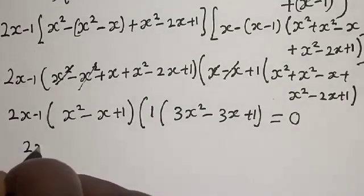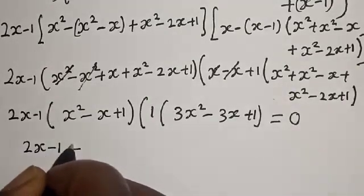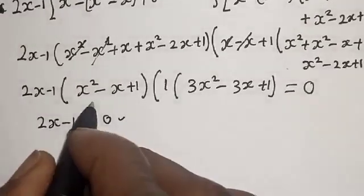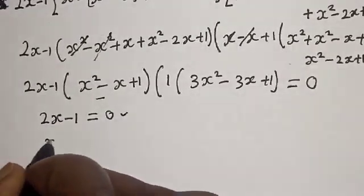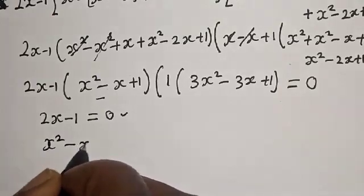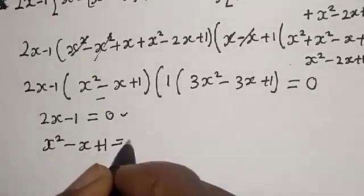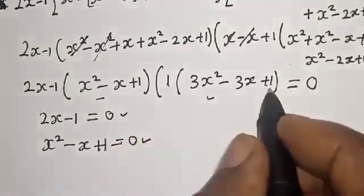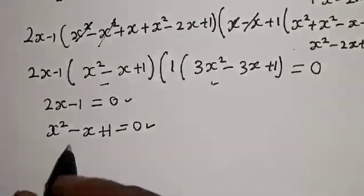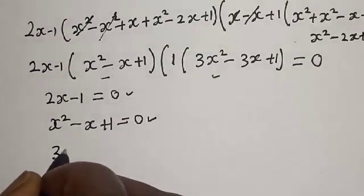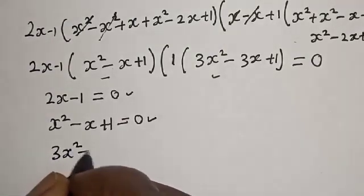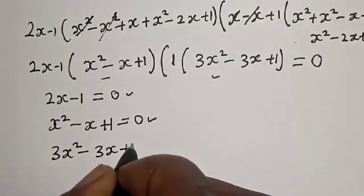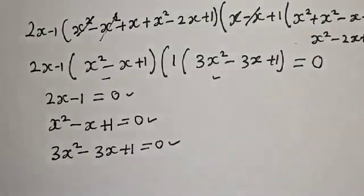Everything is equal to 0 and there are three cases here. Case 1: 2x minus 1 is equal to 0. Case 2: x squared minus x plus 1 is equal to 0. Case 3: multiplying 1 by everything gives 3x squared minus 3x plus 1 is equal to 0.